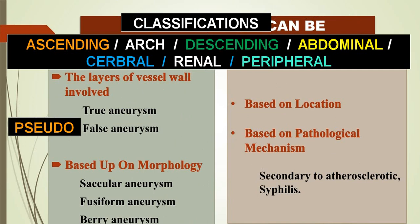Depending upon the anatomy, aneurysms can be in the ascending part of the aorta, arch, descending part, abdominal aorta, cerebral blood vessels — which we call berry aneurysm — renal artery involvement, or even a peripheral artery like the popliteal artery or iliacs.